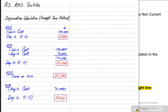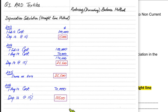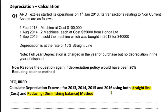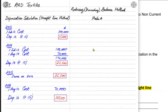In straight line method, depreciation remains the same every year unless a new asset is bought or an existing one is sold. In the reducing balance method, depreciation keeps on reducing each year. When applying the reducing balance method, it is better to calculate depreciation separately for each machine. The three machines are named: Machine A (bought in 2013 for 100,000), and Machines B and C (bought from Honda Limited at 35,000 each).